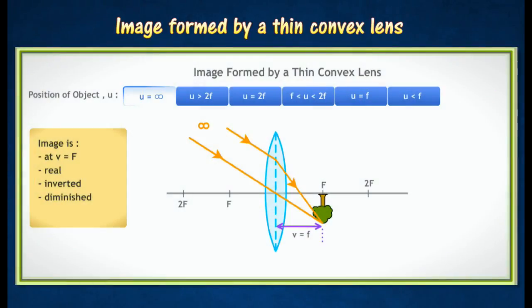When the object is placed at infinity, the image will appear at F, which equals V. The image formed is real, inverted, and diminished. This position is used as the objective lens of a telescope.